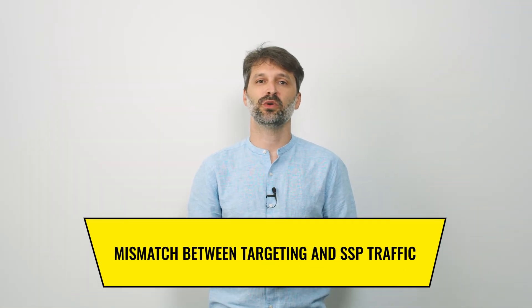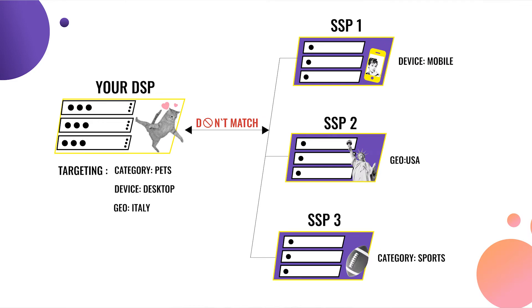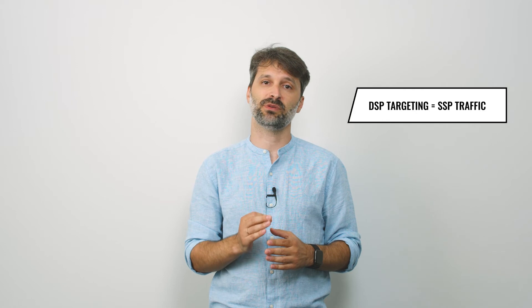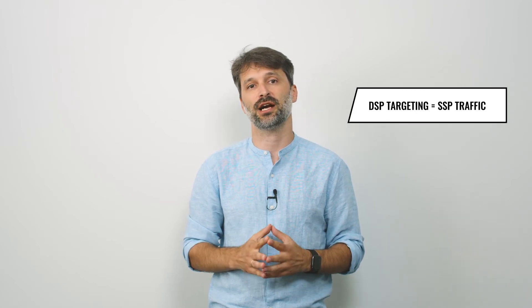Number 2: mismatch between your targeting and available SSP traffic. Every SSP is different in terms of traffic type. Say you are connected to 3 SSPs — one offers solely mobile traffic, the second has users only from the USA, and the third is connected to sports websites. If you want to target cat lovers from Italy on a PC, you won't get traffic from any of those SSPs, simply because they don't have the relevant one. If your targeting options misalign with the actual SSP traffic, an SSP will not be able to deliver relevant impressions. When launching a new campaign, choose SSPs that can provide you with traffic that matches your targeting preferences.